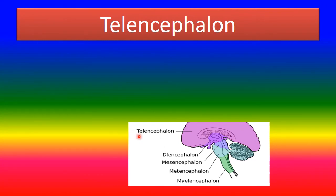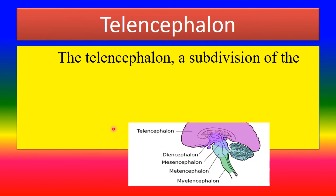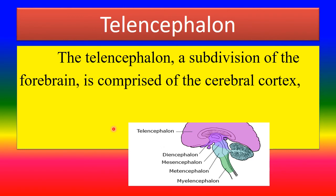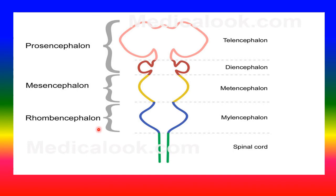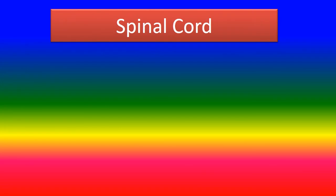The telencephalon is a subdivision of the forebrain. It is comprised of the cerebral cortex, hippocampus, amygdala, olfactory bulb, and basal ganglia. Looking at pictures of the telencephalon shown in different colours for visualisation.